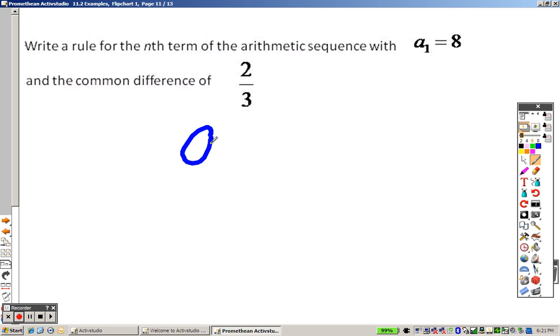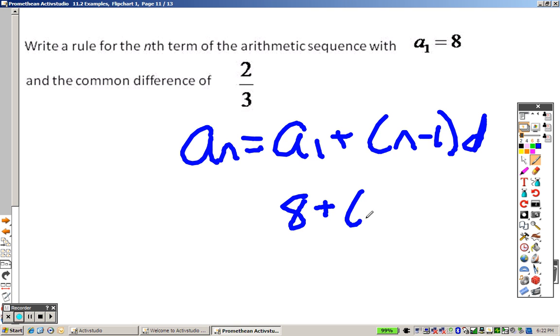This, once again, it's according to the formula. And here's the formula again. We know that 8 is what it started with, and we also know that the common difference is 2 thirds, so I distribute that through.